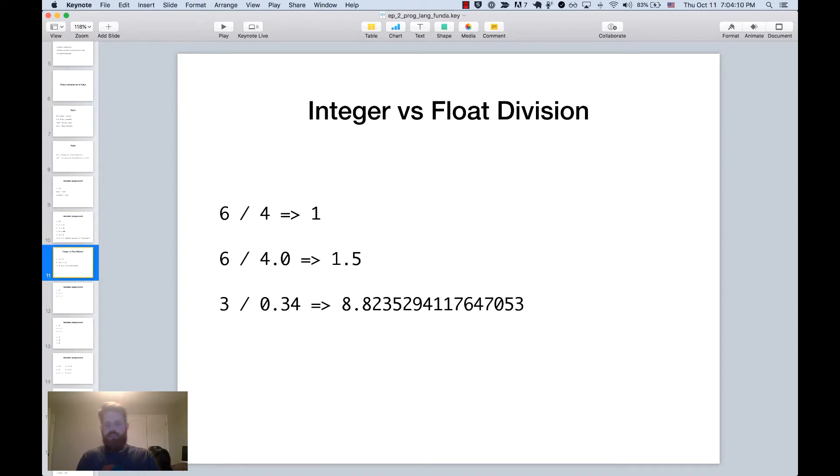Now, one important caveat that some languages have, if you ask for division in Ruby, by default, it does integer division. So six divided by four returns one, because four only goes into six one time. If you want the float division, you have to make one of the numbers a float, or give it a decimal. So if you want to divide six by four with decimals, you can do six divided by 4.0. 4.0 is a float, and it will give you the answer 1.5. And of course, if you want to do that with a decimal already, it automatically does that for you, as in the last example.